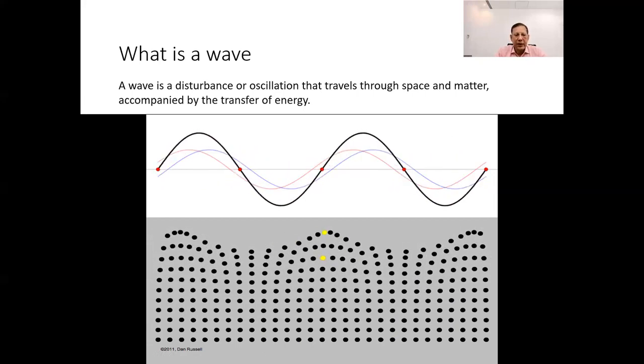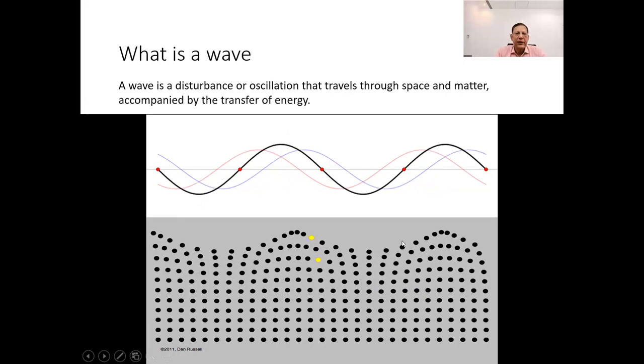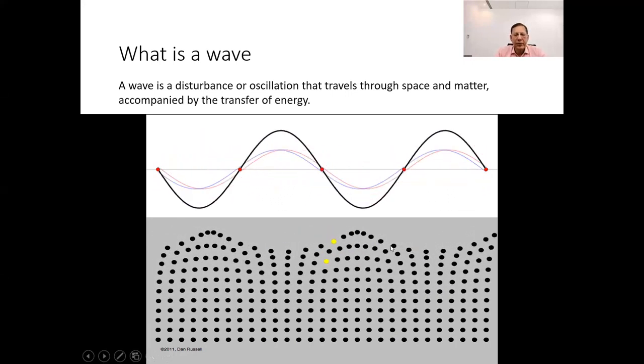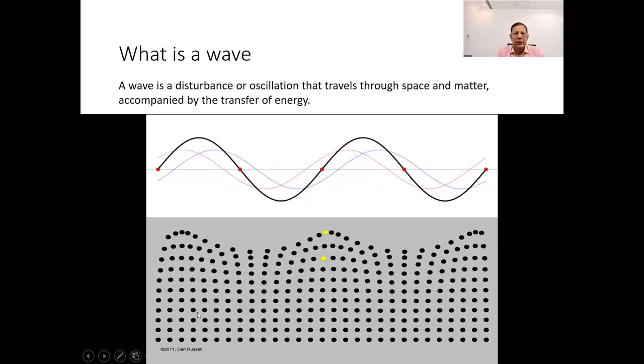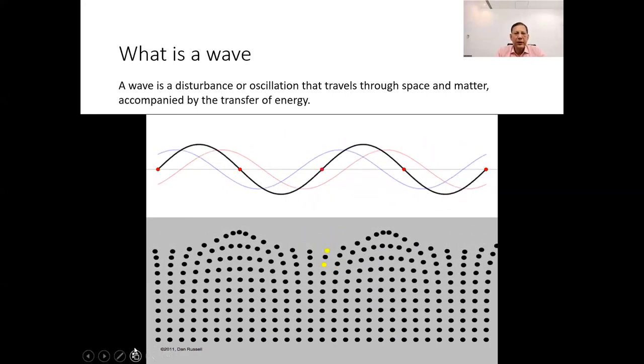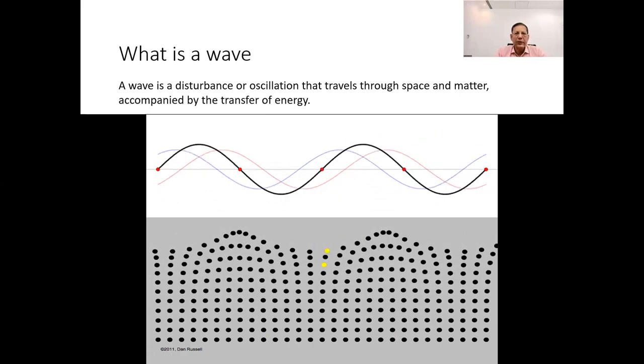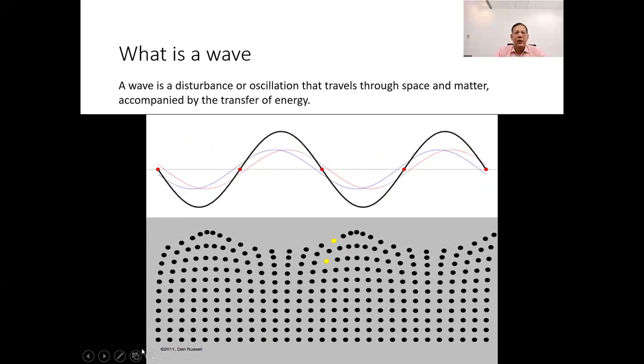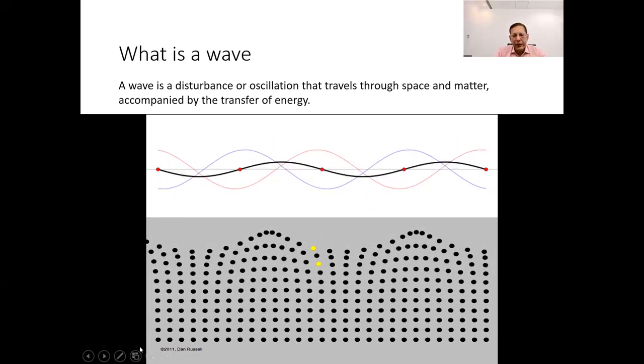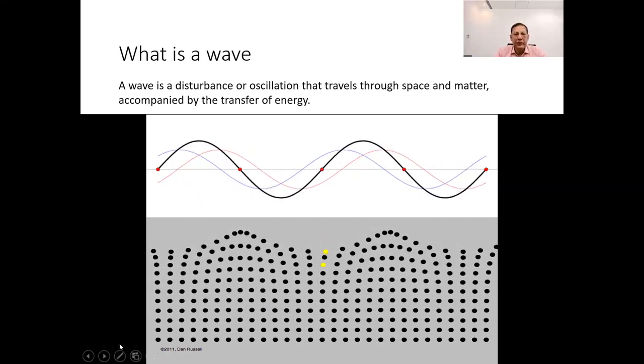As waves propagate, they carry energy from one place to another, but they don't necessarily move the medium itself. This means that waves can transmit energy over long distances without physically displacing the material through which they travel. Waves during propagation are distinguished by their periodic variation in certain physical attributes, including displacement, pressure, or the strength of electric and magnetic fields.